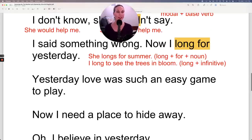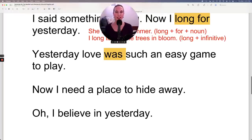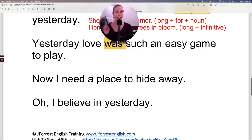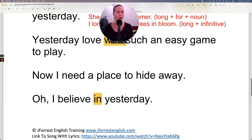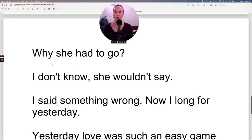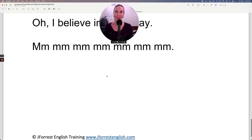Let's continue on. Yesterday, love was such an easy game to play. Of course, our verb to be, in the past simple, conjugated with our subject, which is love. That's why it's was. Now, I need a place to hide away. Oh, I believe in yesterday. Again, I believe in you. I believe in your abilities. I believe in your talent. You got this. Let's continue on. Okay. This is back to the chorus. So, I don't think there's anything new here. Why she had to go. We already talked about this. This is the same as before. And that's the end of the song.